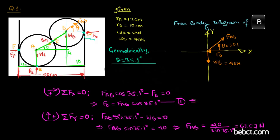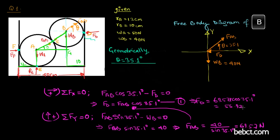Now substituting FAB into relation 1 to find FD: FD equals 69.57 times cos 35.1 degrees, which equals 56.90 Newtons. So FAB equals 69.57 Newtons and FD equals 56.92 Newtons.